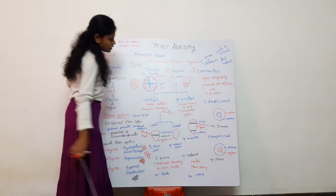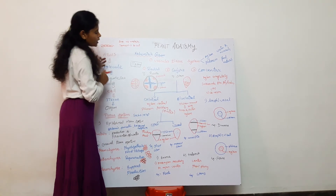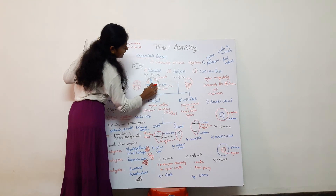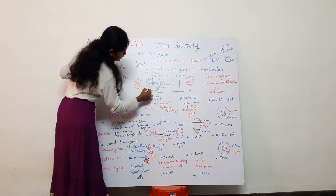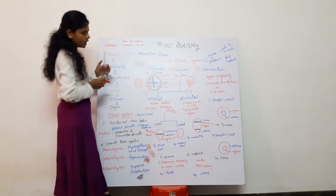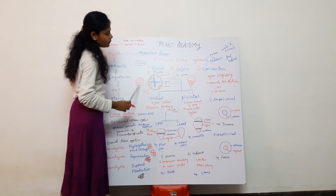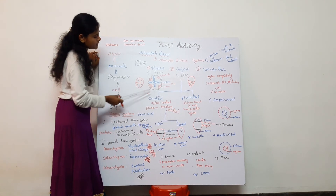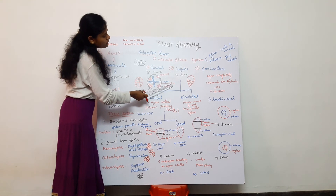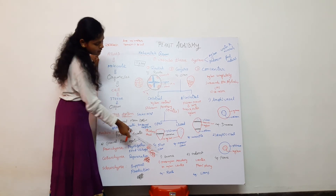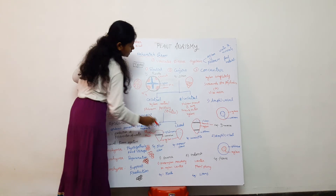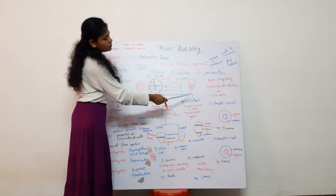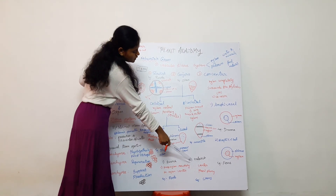Last topic: exarch and endarch. Exarch means, in the root, the protoxylem is on the outer side and the metaxylem is on the inner side. Small-sized cells are protoxylem and large-sized cells are metaxylem. Metaxylem is in the center and protoxylem is in the periphery — this is exarch, found in roots. Endarch means protoxylem is in the center and metaxylem is in the periphery — found in stems.